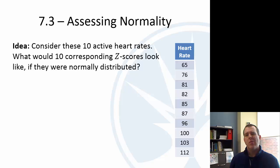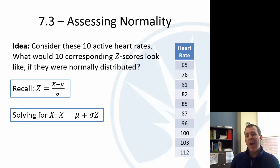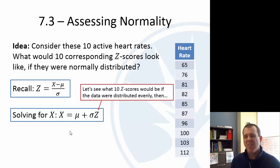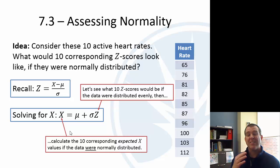What we're going to do is say, what would the z-scores look like if they were normally distributed? We have the z-score formula. We know z is x minus the mean over the standard deviation. If we solve that for x, you get that x is equal to the mean plus the number of standard deviations, which makes sense. We're going to see what the 10 z-scores would be if the data were distributed evenly on that bell-shaped curve, and calculate what the 10 corresponding expected x values would be if the data were normally distributed.